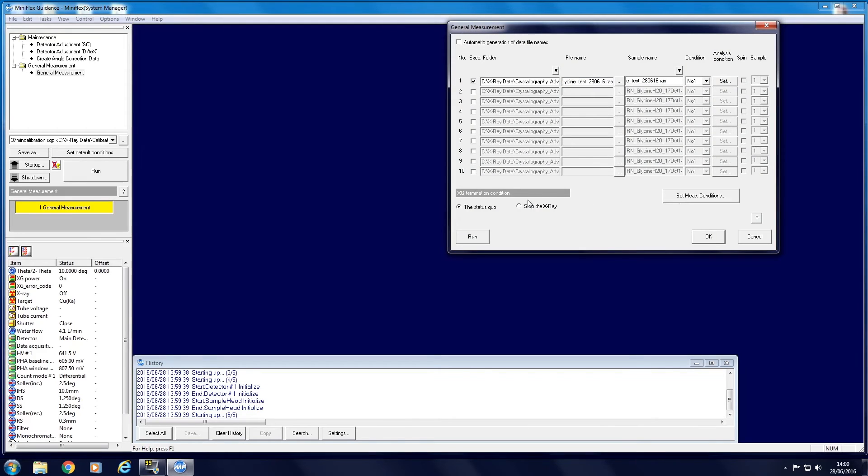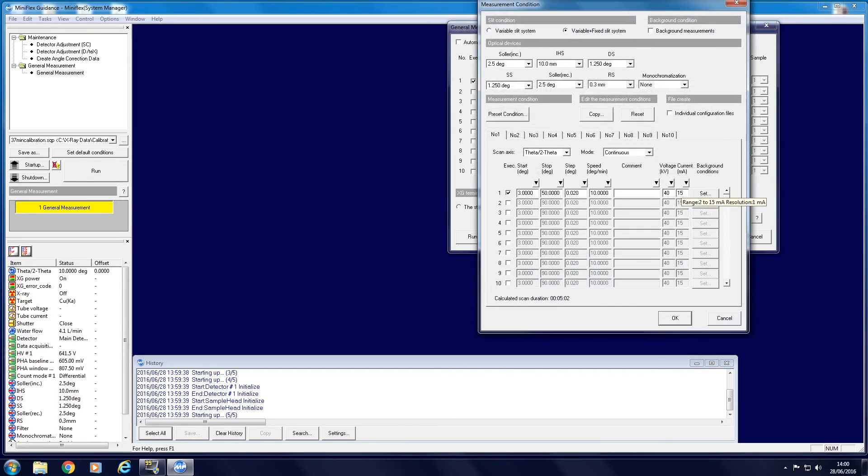After choosing name and directory, select the Stop the X-ray option and press Set Measurement Conditions. Ensure the settings are as described in your lab script, and click OK.